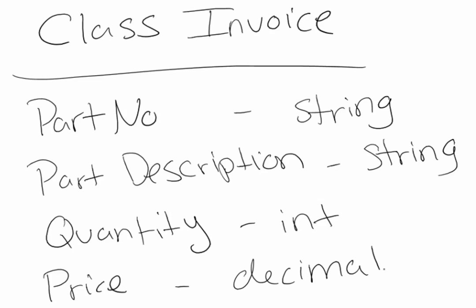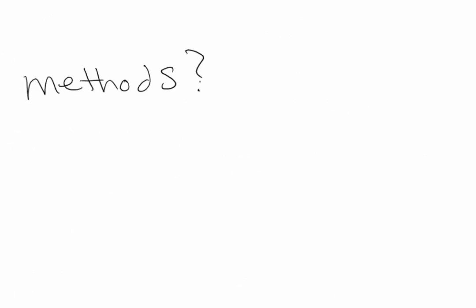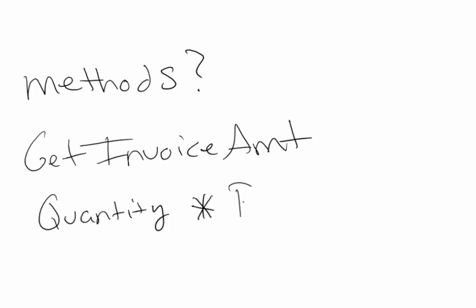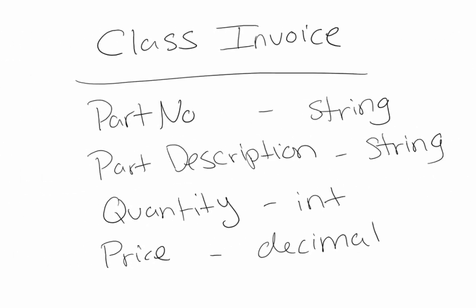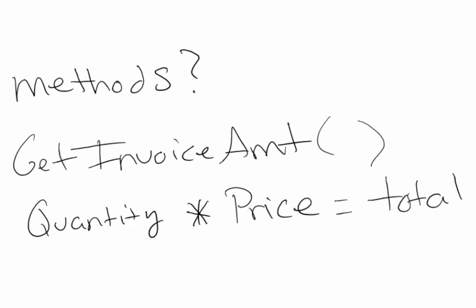Once you have the members of your class lined out, you can start coding the class. You may also want to think about methods — what are some of the functions that your class will need to perform on the data? In this case, we're going to create a method called GetInvoiceAmount, which will calculate the total by multiplying the quantity by the price. Since quantity and price are both located in our class members, GetInvoiceAmount won't need any parameters, but it will need to return a decimal.